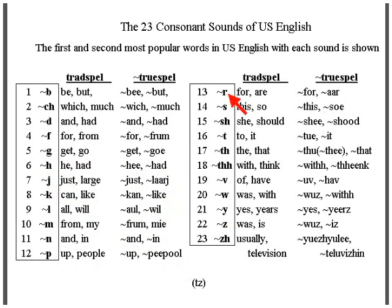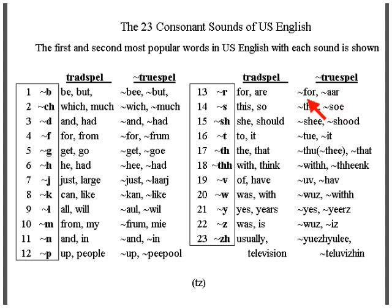The R sound, spelled by the letter R, as in 'for.' The R in 'for' is usually spoken in US English.